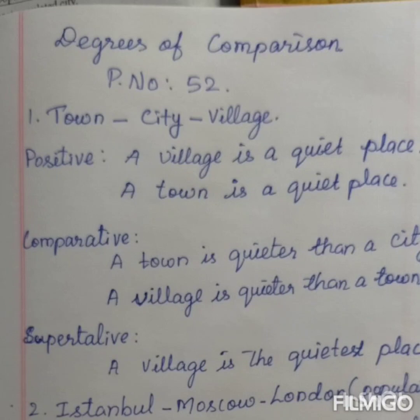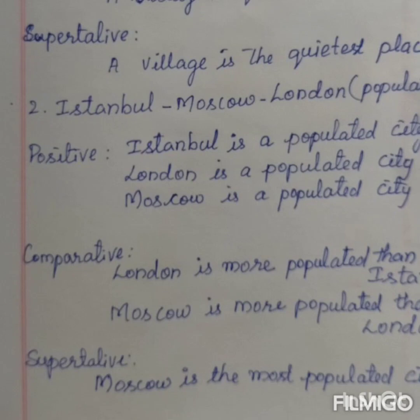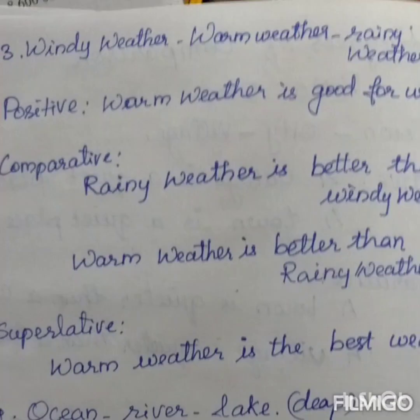Next: Istanbul, Moscow, London — adjective is 'populated'. Moscow is the most populated city. For positive degree: Istanbul is a populated city, or London is a populated city. For comparative degree: London is more populated than Istanbul; Moscow is more populated than London. For superlative degree: Moscow is the most populated city.